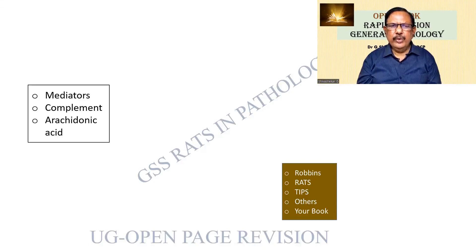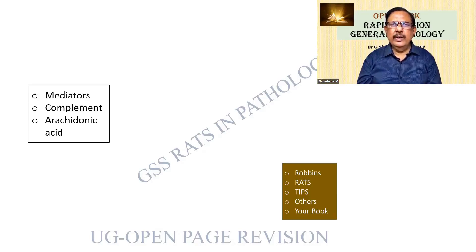Is it all difficult for you? I don't think so. Just sit back quietly and read. So, inflammation again: a definition, then the vascular changes, what are all the chemical mediators, what is arachidonic acid metabolism, what is acute, what is chronic, granuloma, types of giant cells.